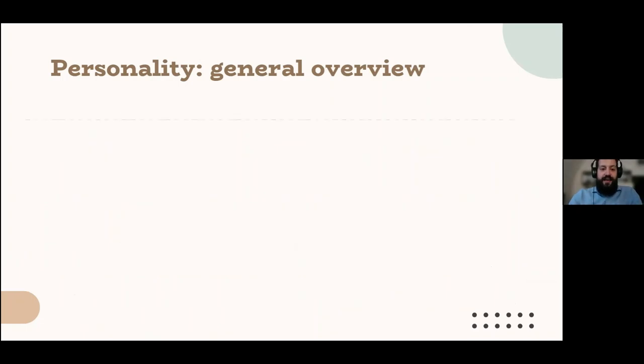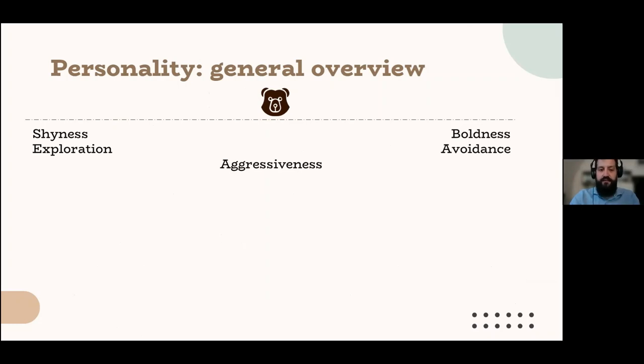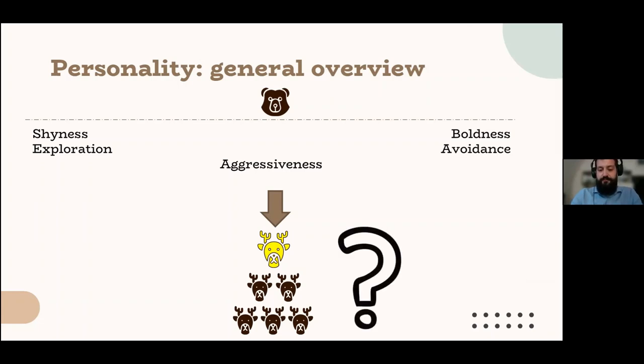It must be also said that there are several axes on which an individual can be located personality wise. For example, there is shyness, boldness, there is exploration avoidance, there is aggressiveness and there are several more. I chose these three for a reason because they are thought to be connected to the definition of a dominance hierarchy, which is going to be an important aspect that I will discuss today. Even though there is no unanimous consensus on the role these personality traits play in the definition of the hierarchy.